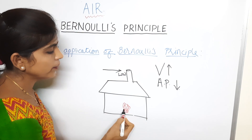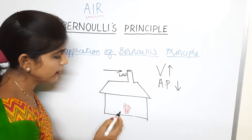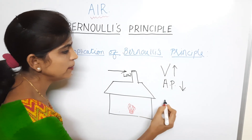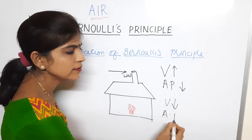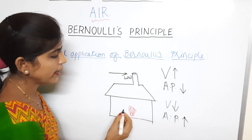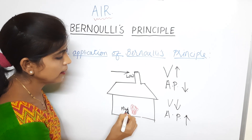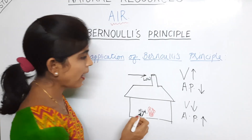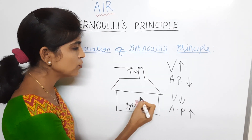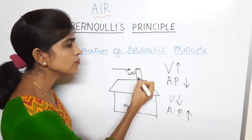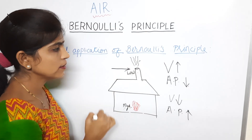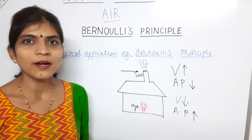Wherever there is the fireplace, the air surrounding it will be moving slowly, so the velocity will be less, and therefore the air pressure there will be high. We know that air moves from a high pressure area to a low pressure area. So as air moves from high pressure to low pressure, it will carry smoke along with it, and this smoke will be emitted into the environment. This is how the chimney works according to Bernoulli's principle.